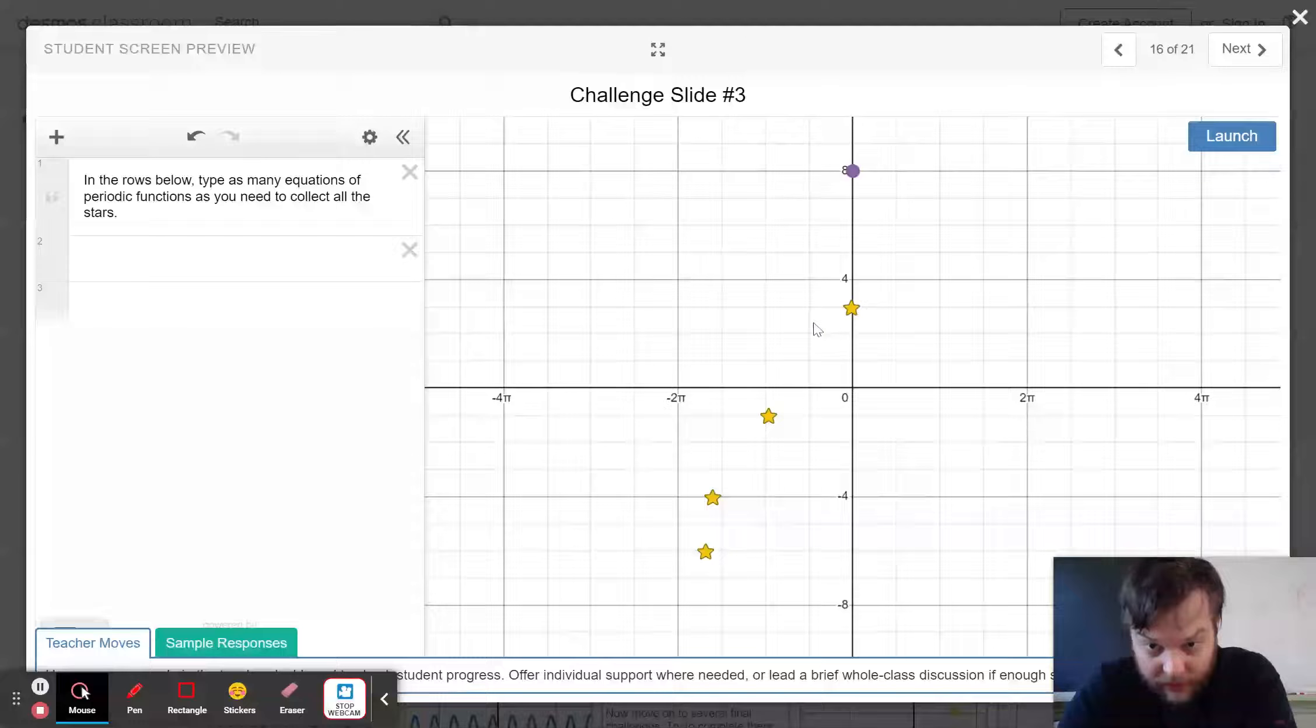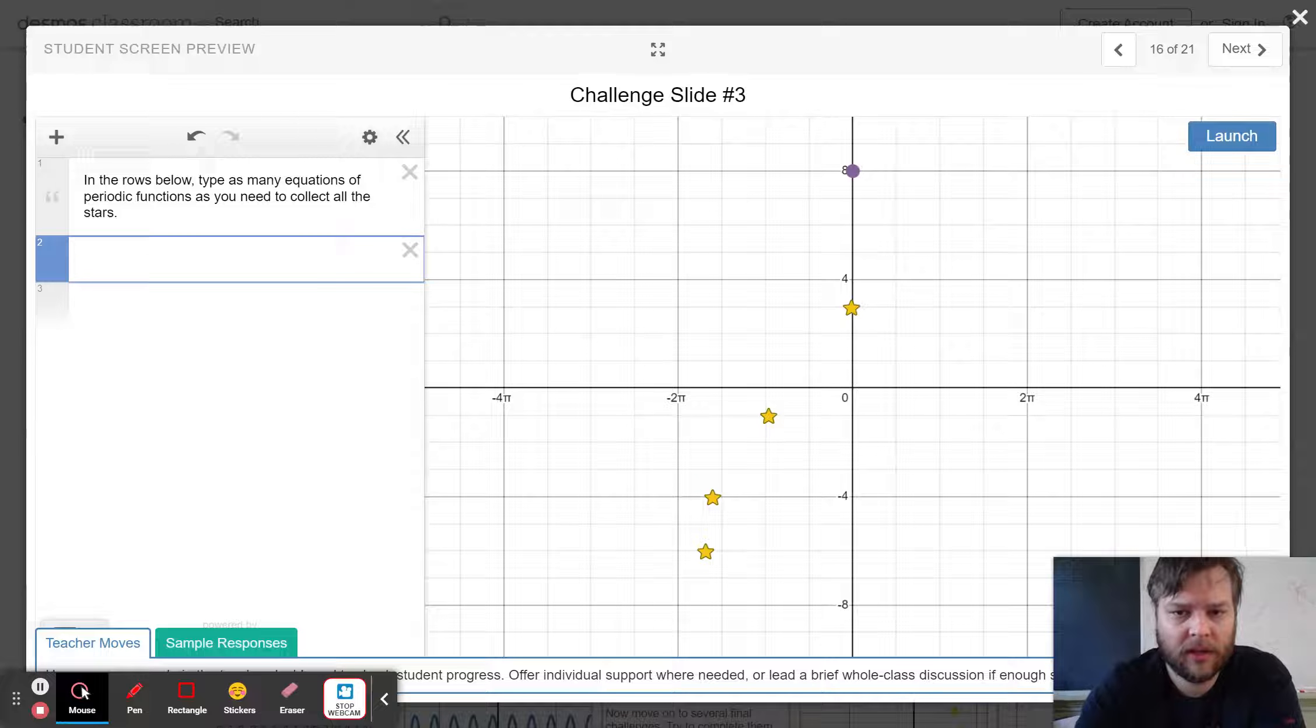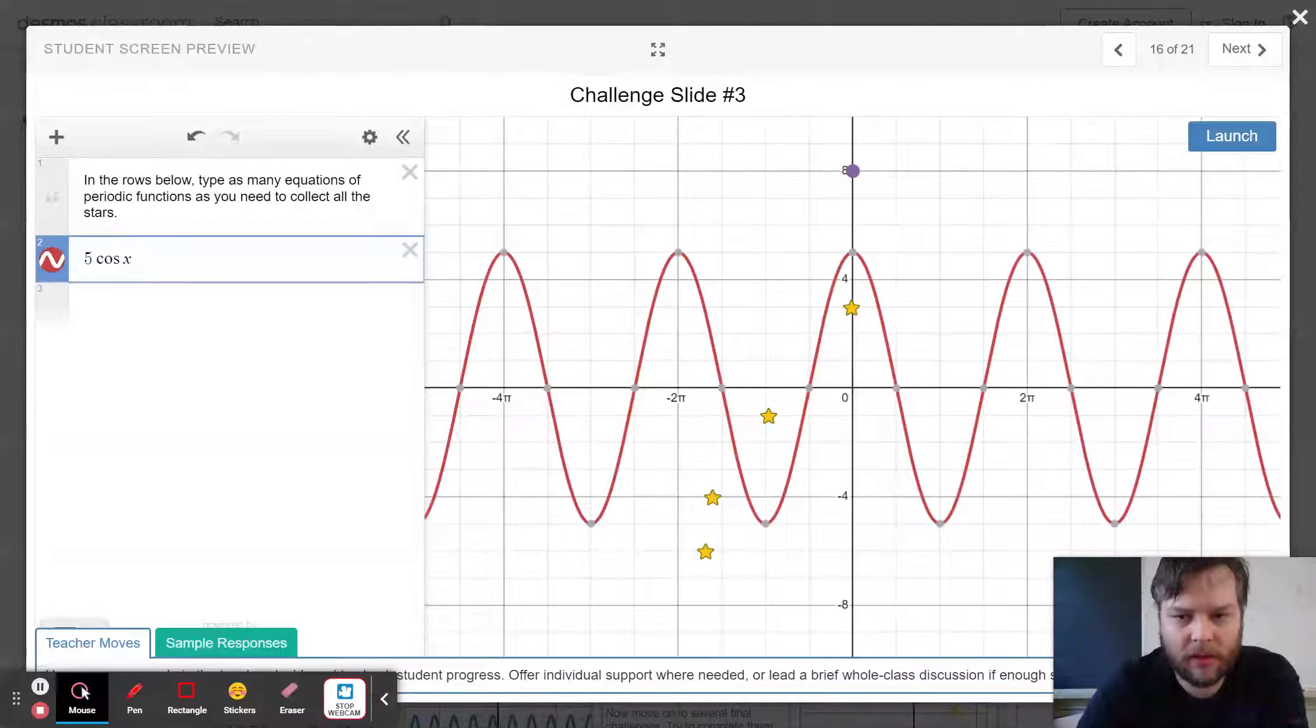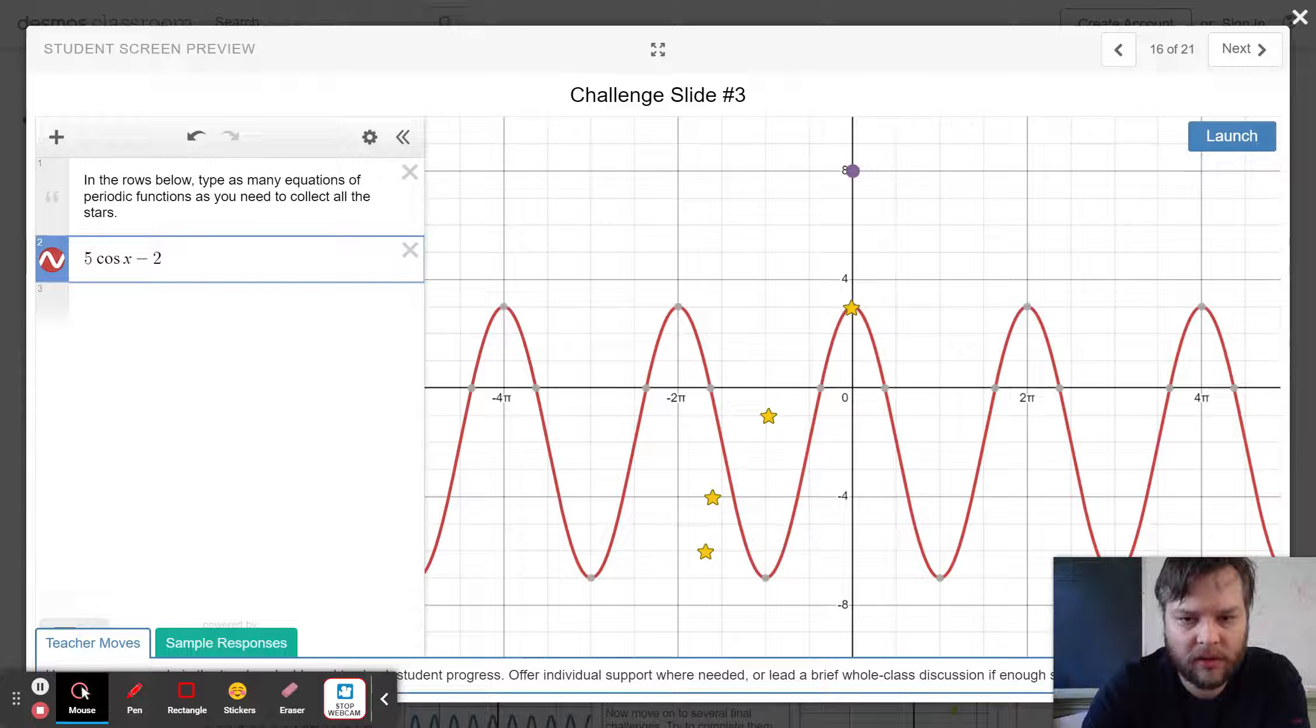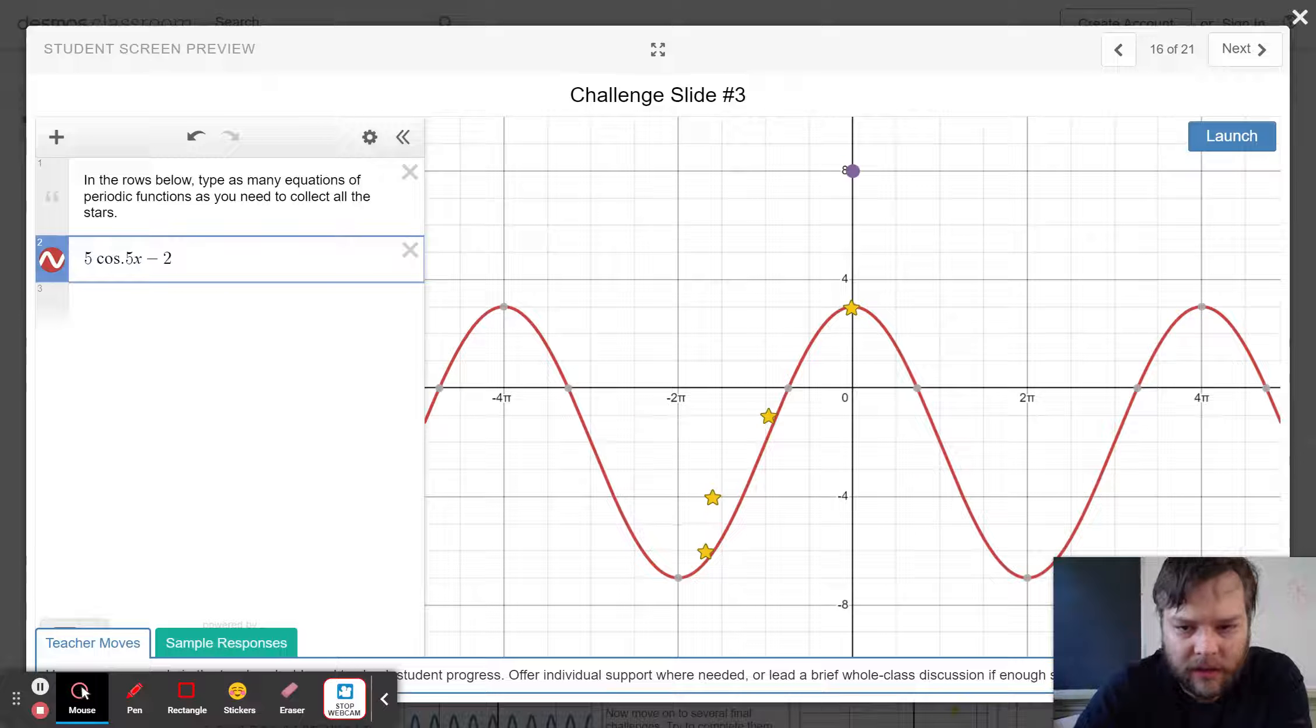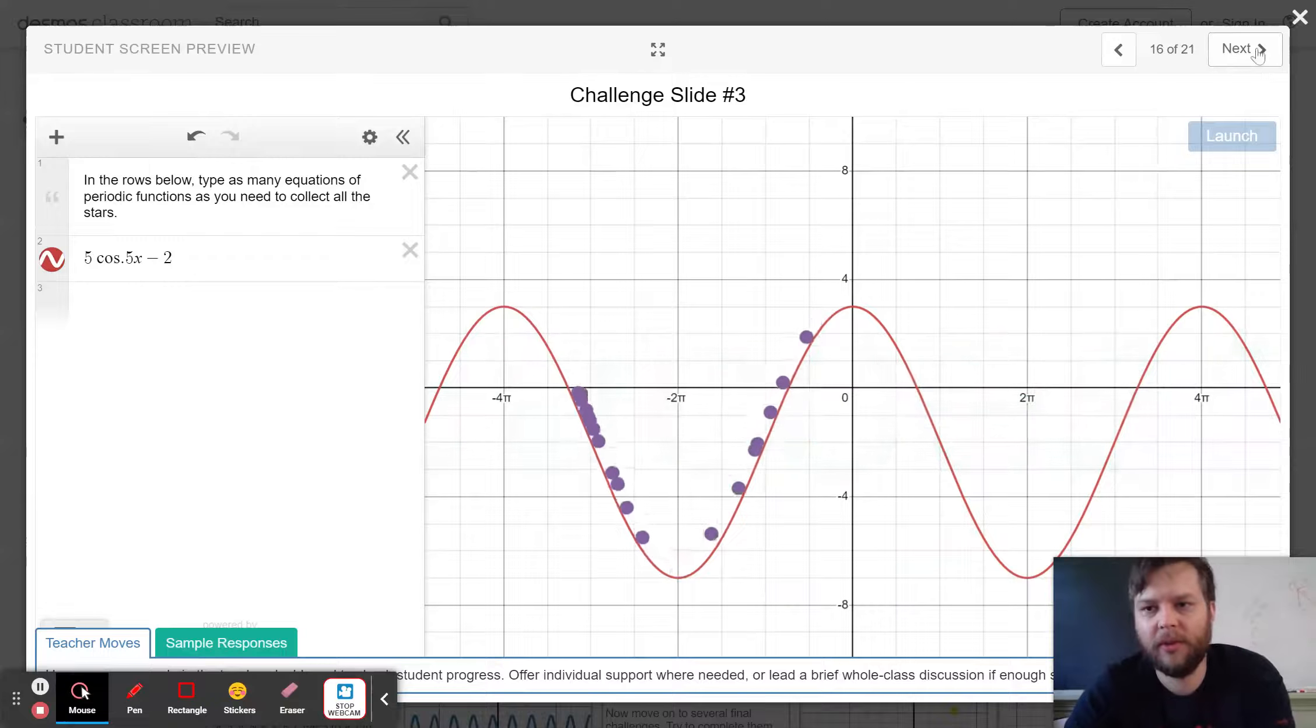Now this looks weird. Let's try a cosine graph here. Let's try making it big. Let's try shifting it down. Let's try stretching it out a bit. See if that gets it done. I don't know if that's going to get it done. Yeah, there we go. Beautiful.